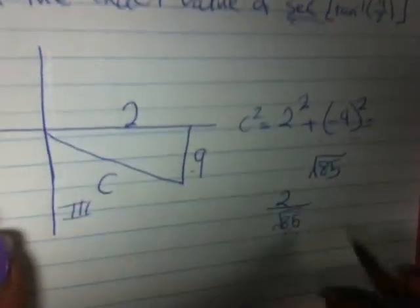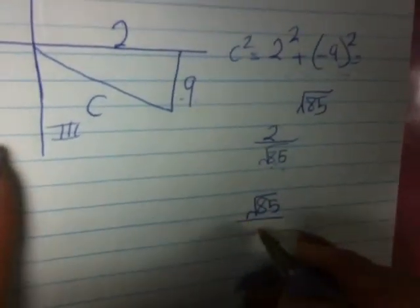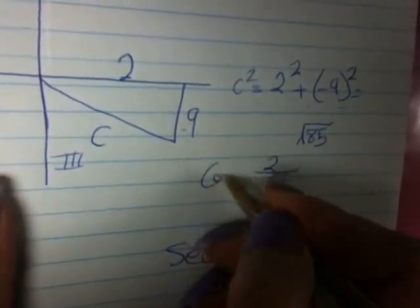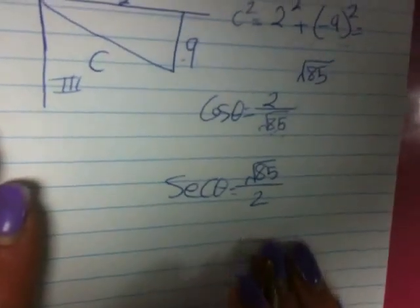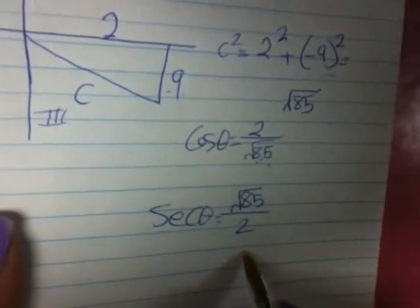Now we have to turn it to secant. Secant is just the reciprocal: root 85 over 2. This is our secant. We have now our secant of root 85 over 2.